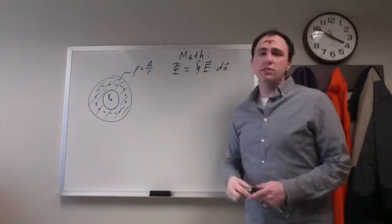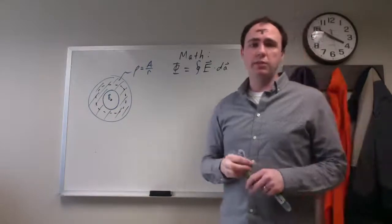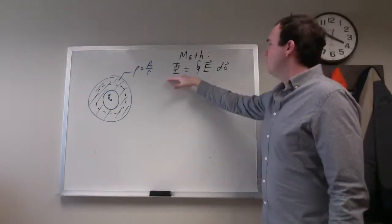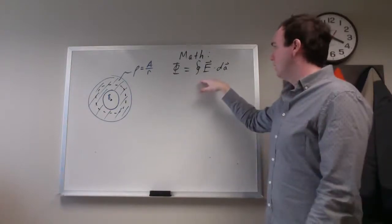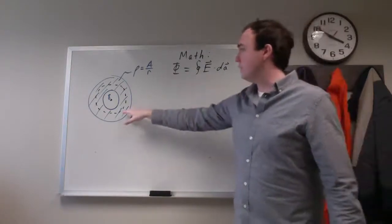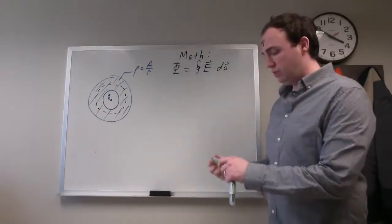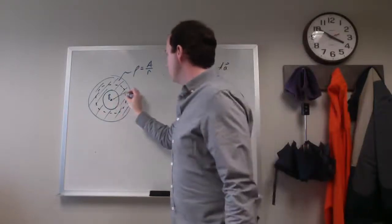When you do Gauss's Law to figure out what the electric field would be at this point, you have the math side of calculating the flux is the same as it always is. You choose a spherical Gaussian surface at the point that you're interested in, so this would be at a distance r from the center.